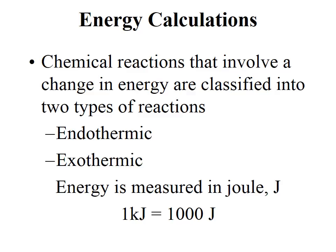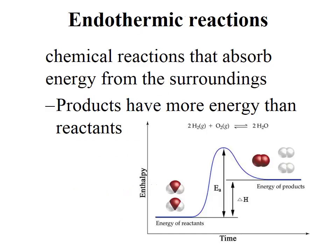Endothermic reactions absorb energy from their surroundings. That means the products have more energy than the reactants. The activation energy is the minimum amount of energy required for the reaction to occur. The difference between the energy of the products and the energy of the reactants is what we call Delta H, or enthalpy change. For endothermic reactions, the products have more energy than the reactants, so energy is absorbed.